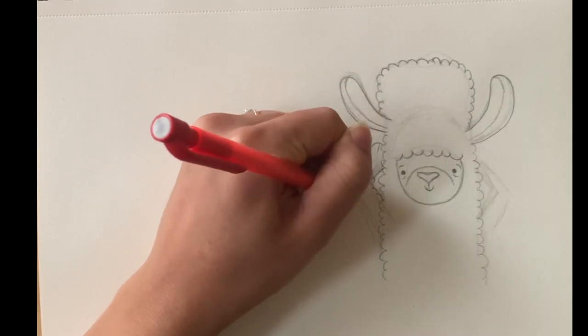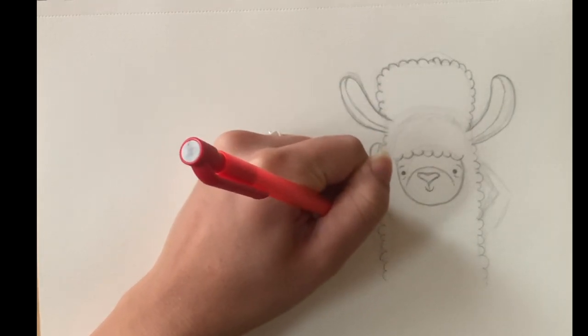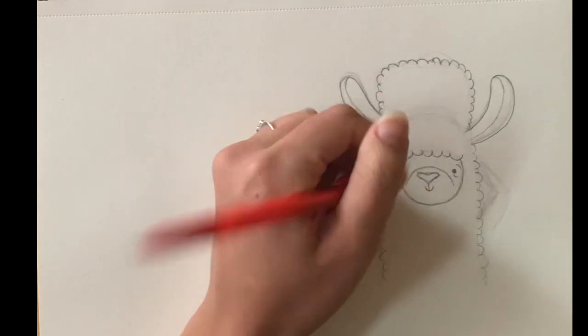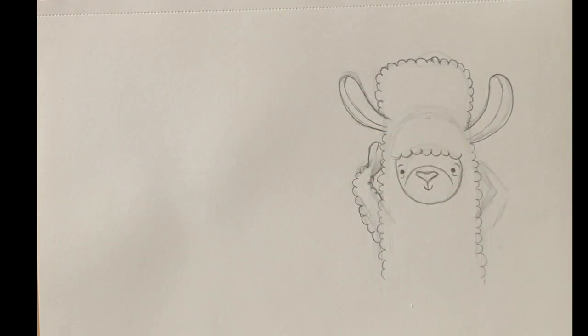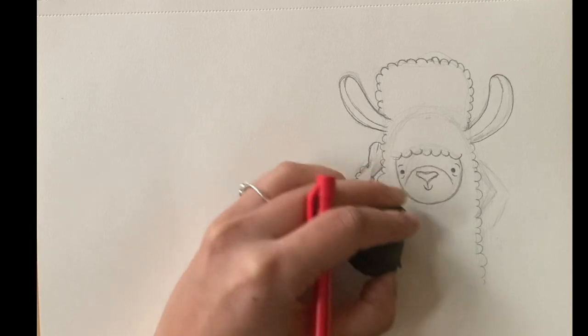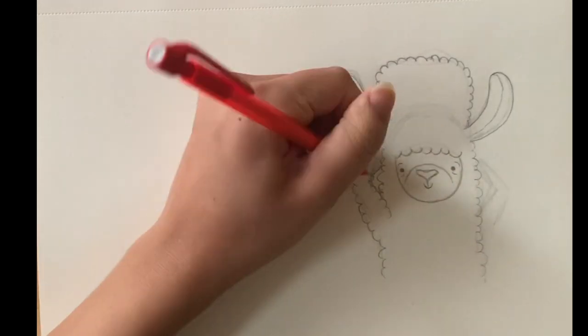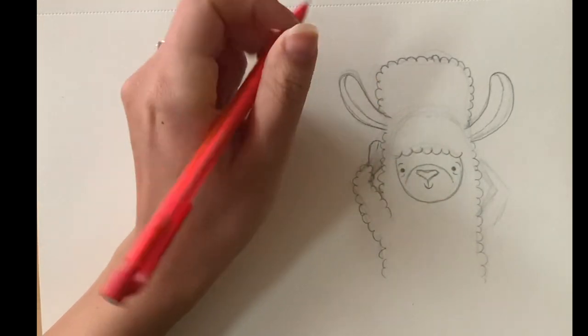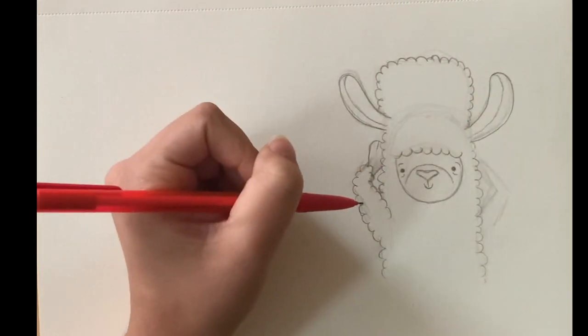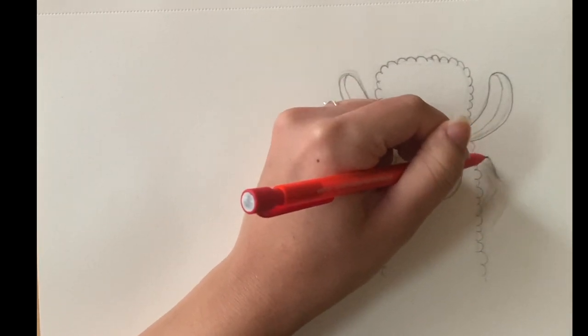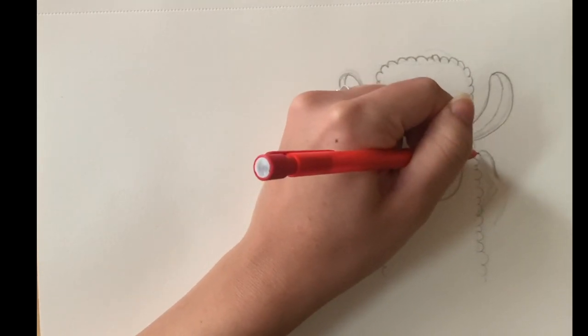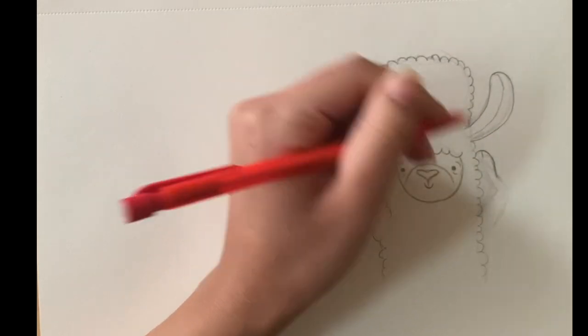Drawing his fluffy arms and grabbing my kneaded eraser here, just erasing any lines that I don't need if they're going to confuse me. Now I'm coming over on the other side and I'm going to be drawing his other arm, pretty much just as I drew his last arm—drawing his fluffy fur.